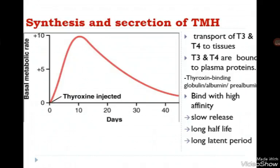An important note is that thyroid metabolic hormones have a very long latent period, partially due to their long half-life and partially due to their signaling pathway, which involves gene expression and the production of new proteins and enzymes, which further delays their action.